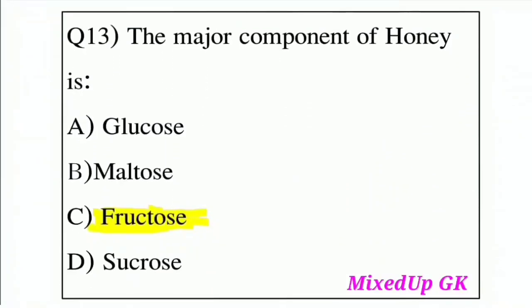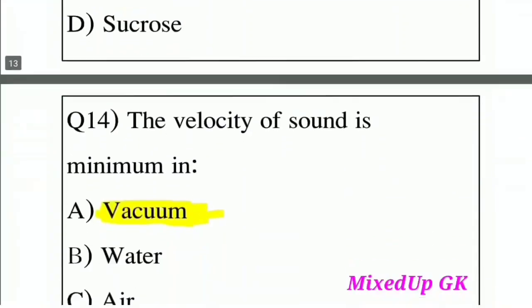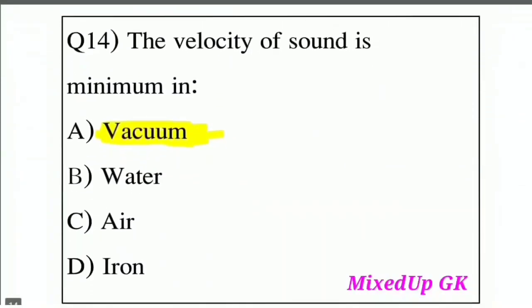Question 13: The major component of honey is — Option A: Glucose, Option B: Maltose, Option C: Fructose, Option D: Sucrose. The correct answer is Option C: Fructose.